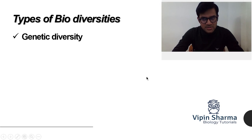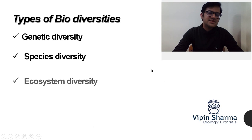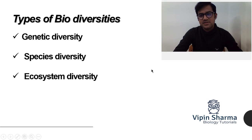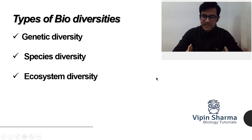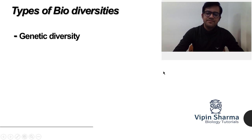Now let's talk about the types of biodiversity, which are: genetic diversity, species diversity, ecosystem diversity, and the fourth one — global biodiversity, which is the mega scale. Let's start with genetic diversity.